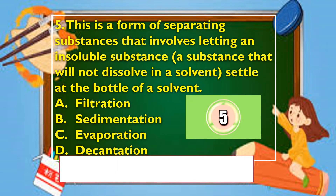Question 5: This is a form of separating substances that involves letting an insoluble substance — a substance that will not dissolve in a solvent — settle at the bottom of a solvent. Is it A. Filtration, B. Sedimentation, C. Evaporation, or D. Decantation? The correct answer is letter B. Sedimentation.